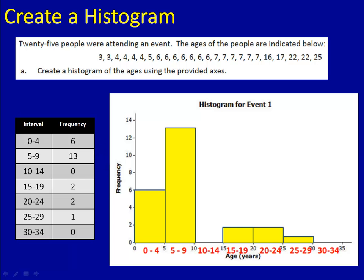Here's our completed histogram. We had 13 people from 5 to 9, 2 from 15 to 19, 2 from 20 to 24, and 1 from 25 to 29.